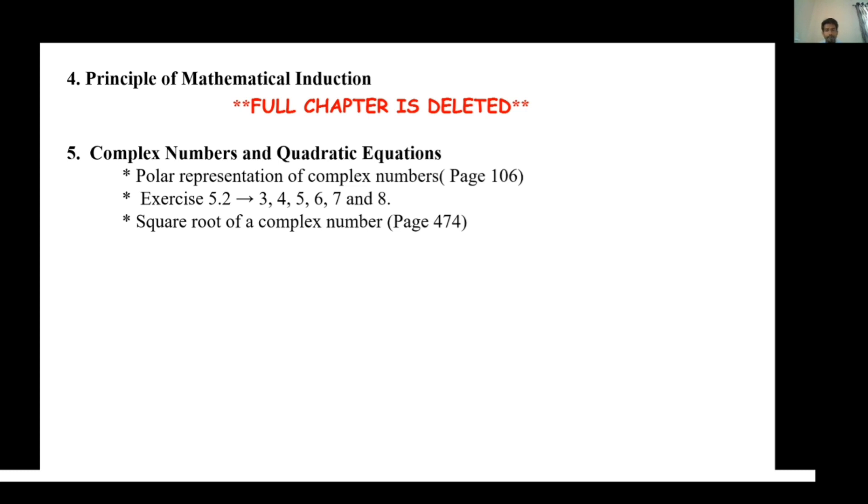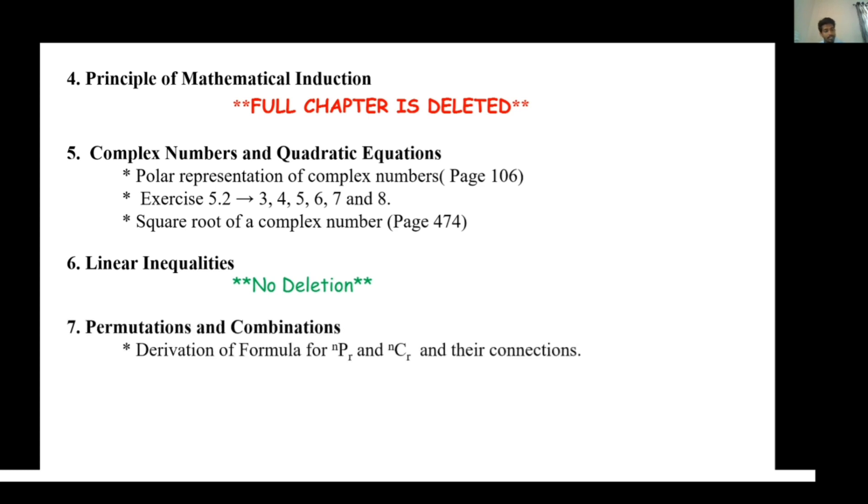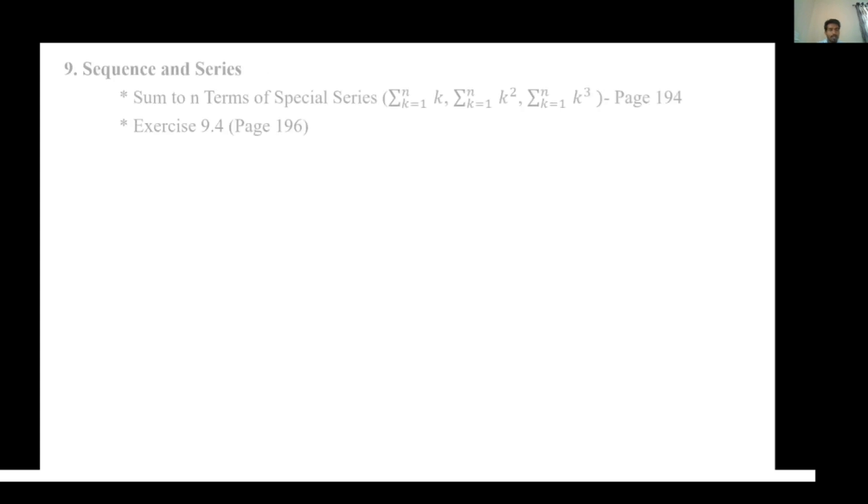Chapter 6, Linear Inequalities, no deletion. Chapter 7, Permutation and Combinations: Derivations of formulas nPr and nCr and connection between them has been deleted. Chapter 8, Binomial Theorem, full chapter is deleted.